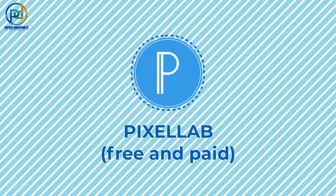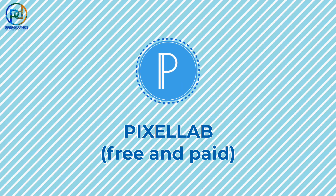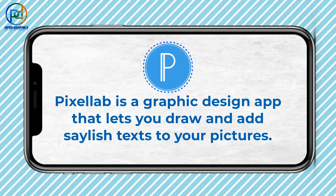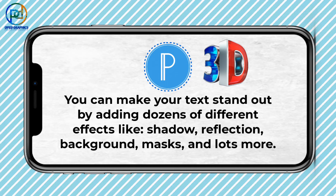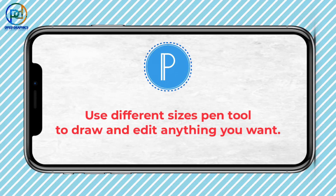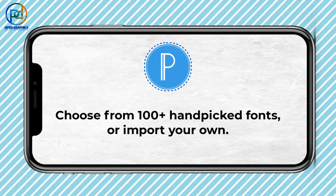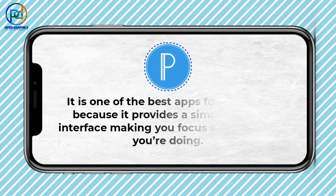Number two: Pixel Lab. Pixel Lab is a graphic design app that lets you draw and add stylish text to your pictures. You can make your text stand out by adding dozens of different effects — shadow, reflections, and lots more. Use different size pens to draw, edit, and pick any fonts you like, or import your own.